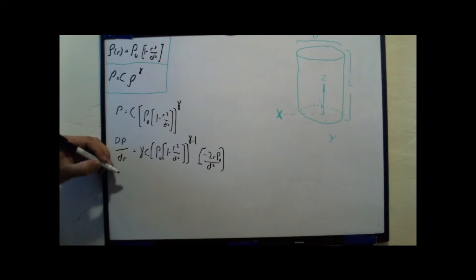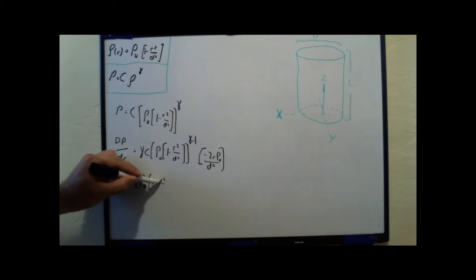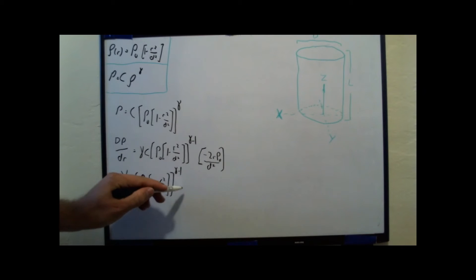So in this case, I have gamma times c times rho naught. I should be calling that rho naught. My professor would be very angry with me if I call it p naught. But rho kind of looks like a p. Times 1 minus r squared over d squared to the gamma minus 1 equals zero. Let's solve for that.